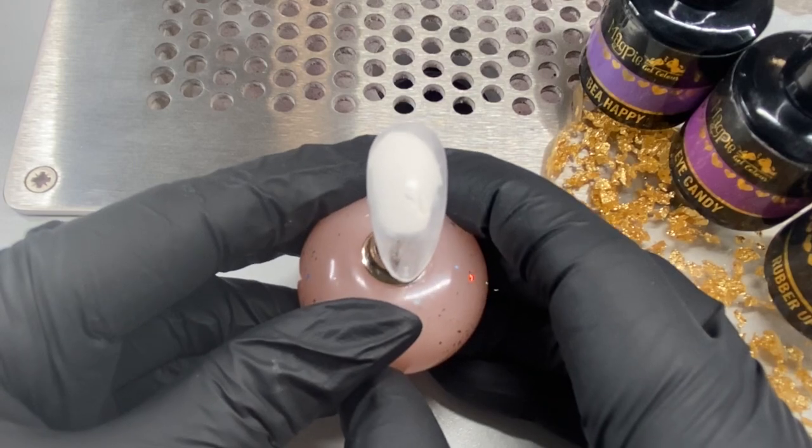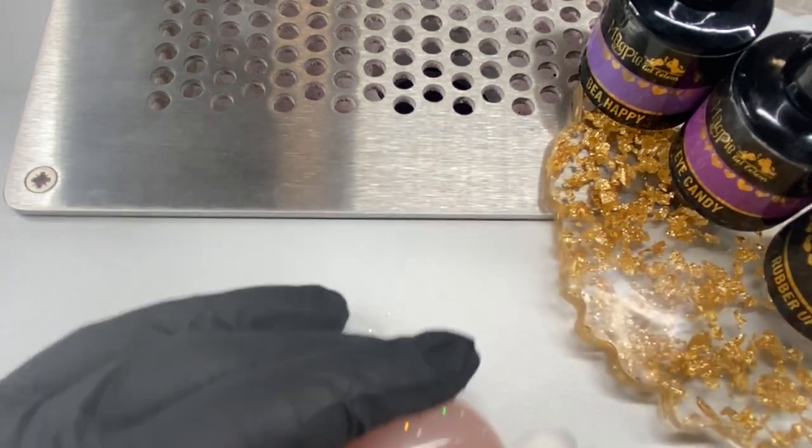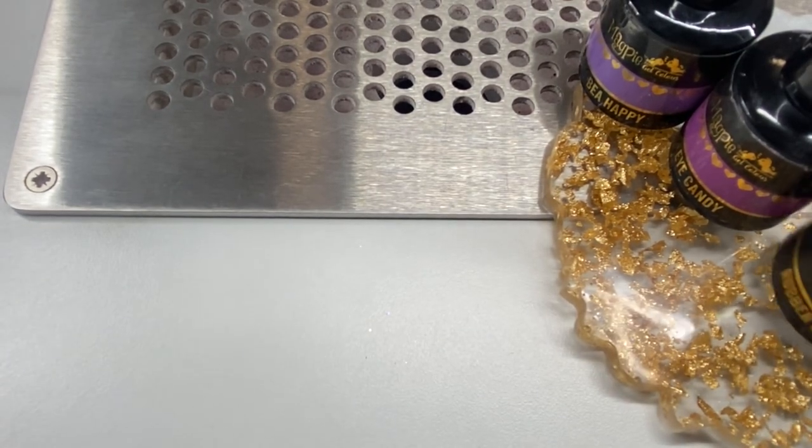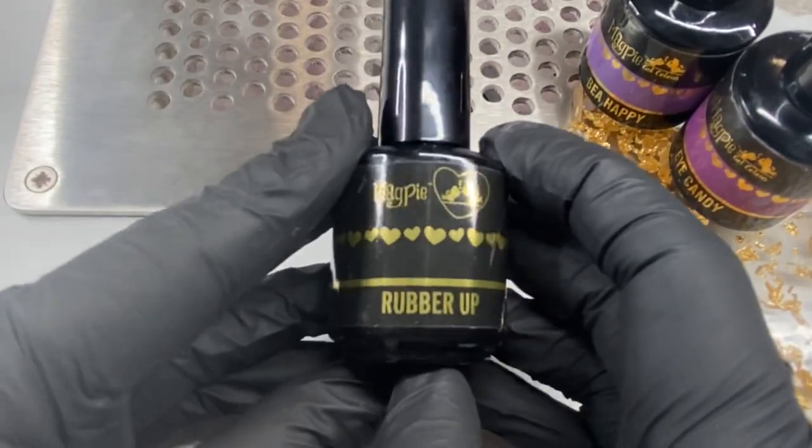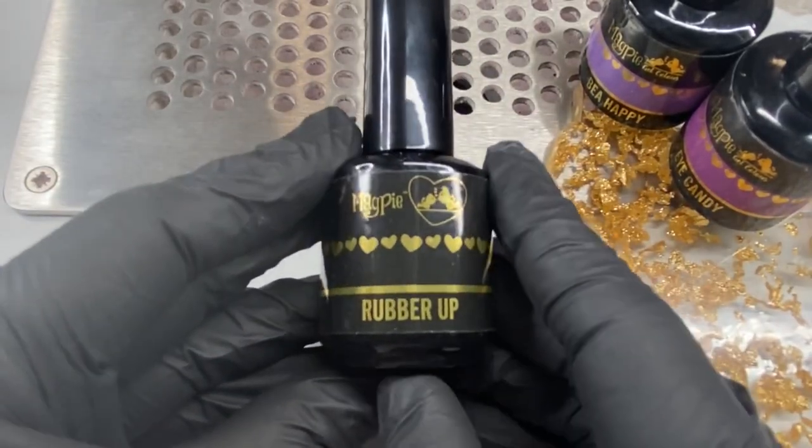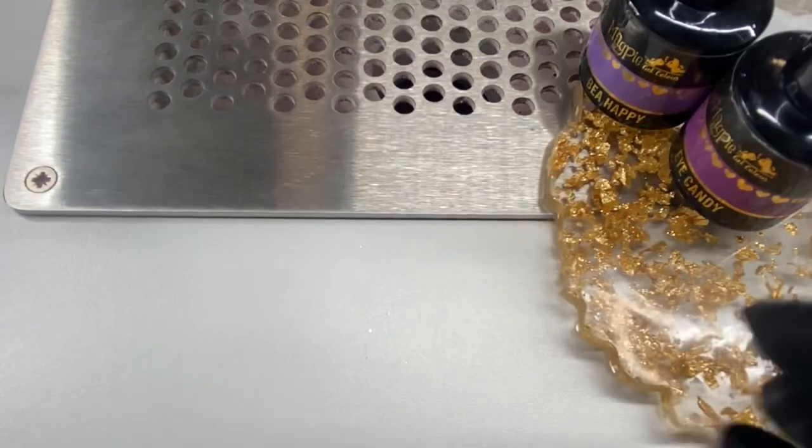Hello, I want to do a quick tutorial today to show you my new technique for doing ombres. The main product I use is Rubber Up. We're going to mix Rubber Up with our two colors.